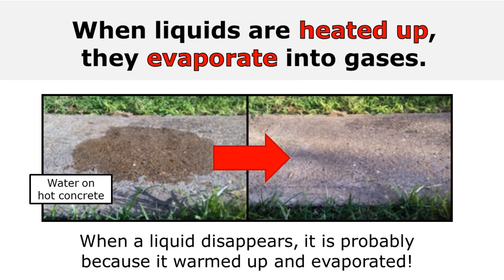When liquids are heated up, they evaporate into gases. Here you can see that I poured some water on some hot concrete. As the temperature of that water increased, the water evaporated and went into the air. When a liquid disappears like this, it's probably because it warmed up and evaporated.